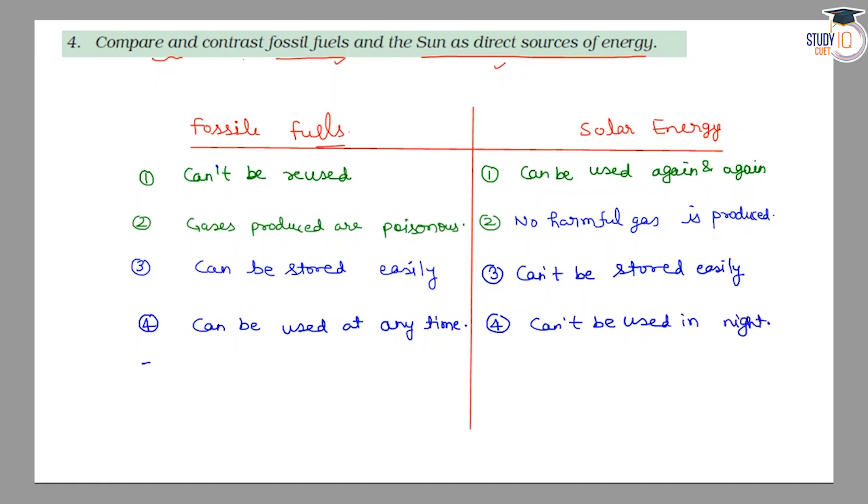Fifth point: fossil fuels are very costly, and solar energy is very easily available and very cheap because once we have the instruments to obtain solar energy, it will be quite easy.